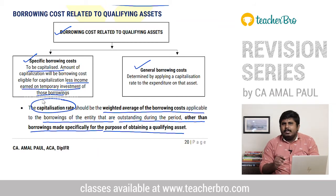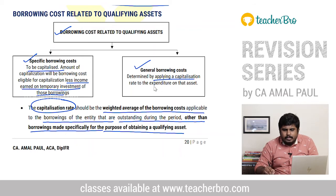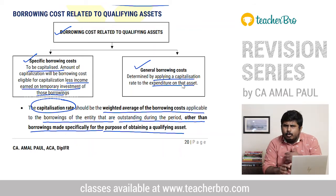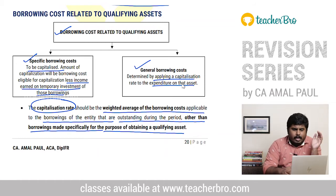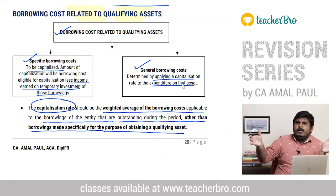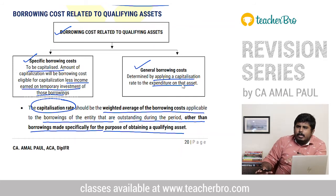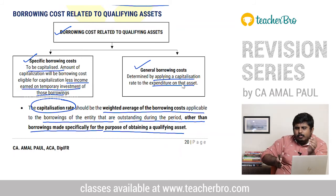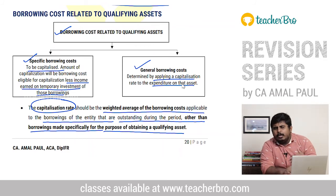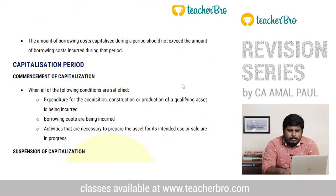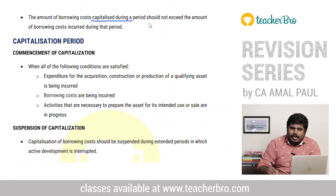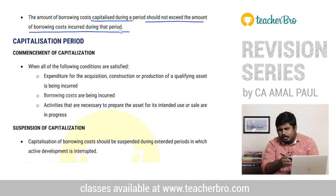For specific borrowing, we capitalize the actual borrowing cost incurred, less any income earned from temporary investment of those funds. For general borrowing, we apply a capitalization rate — the weighted average rate — multiplied by the expenditure incurred during the period. The capitalization amount should not exceed the actual amount of borrowing cost incurred during that particular period.